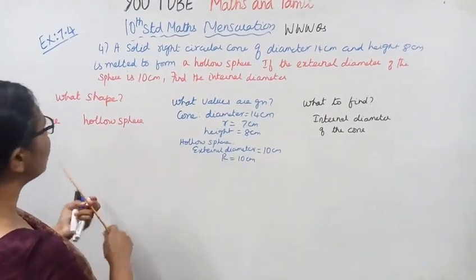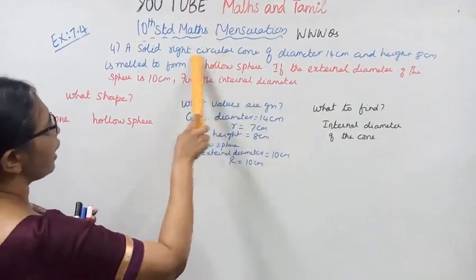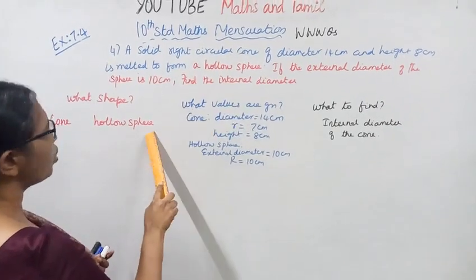What shape? Cone. Right circular cone and hollow sphere.